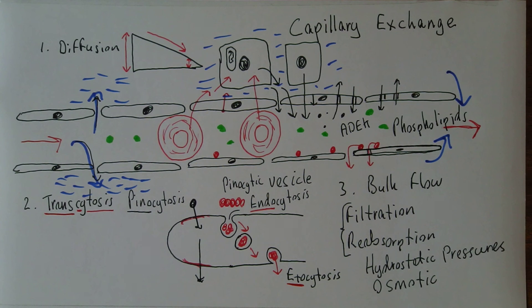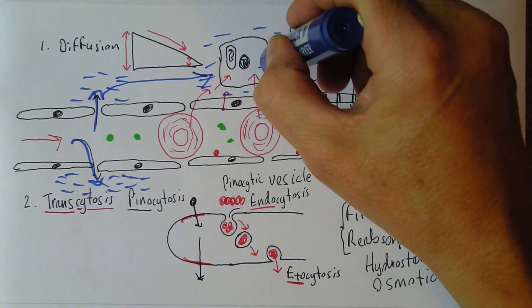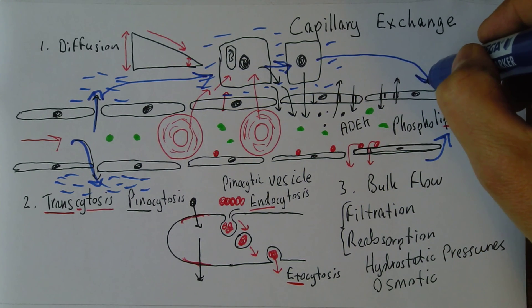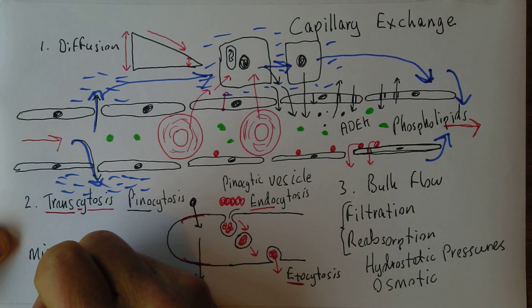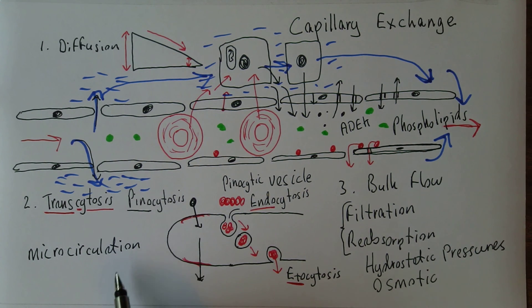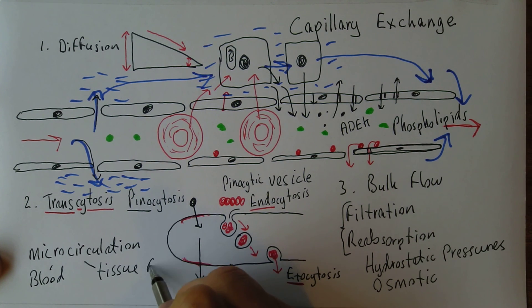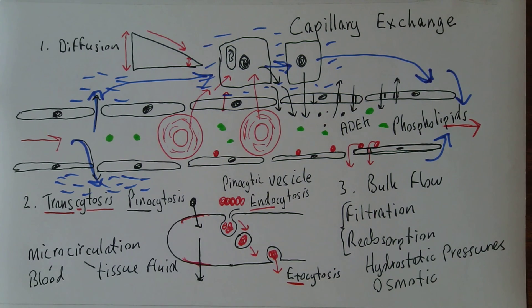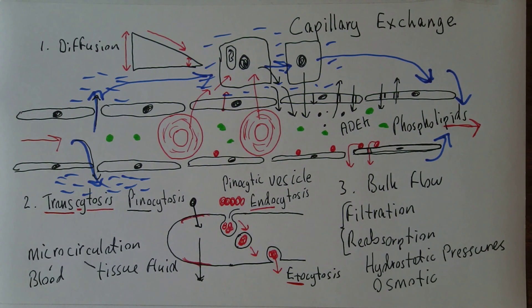Tissue fluid is going to be formed at the arterial end, flow over the cells, keep the tissue fluid nice and fresh, and then be reabsorbed. So we have another aspect of circulation — the microcirculation. There's microcirculation of the blood, but also of the tissue fluid, because it's going to be formed, flow over the cells, and be reabsorbed. The microcirculation is facilitated by the arrival of blood at the arterial end and the exiting of blood via the venule.